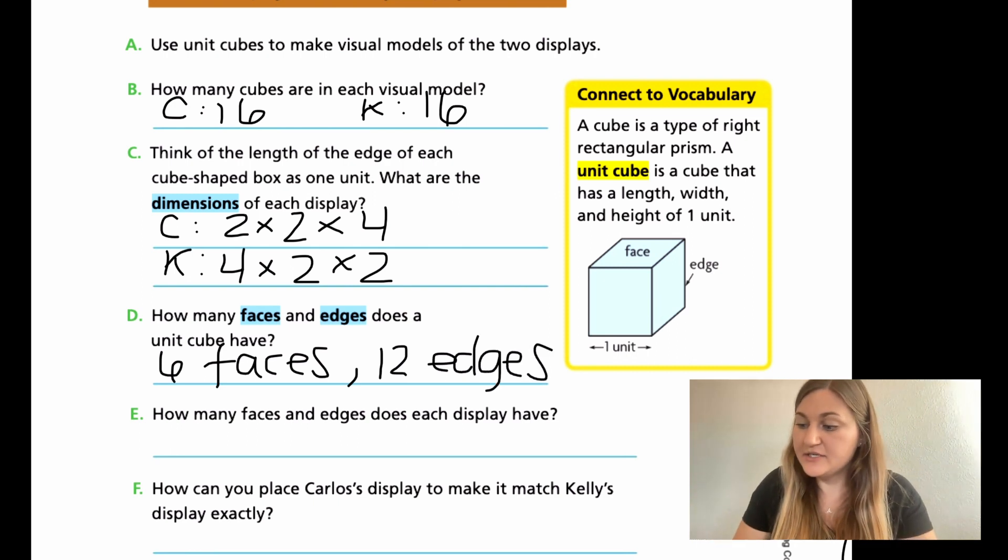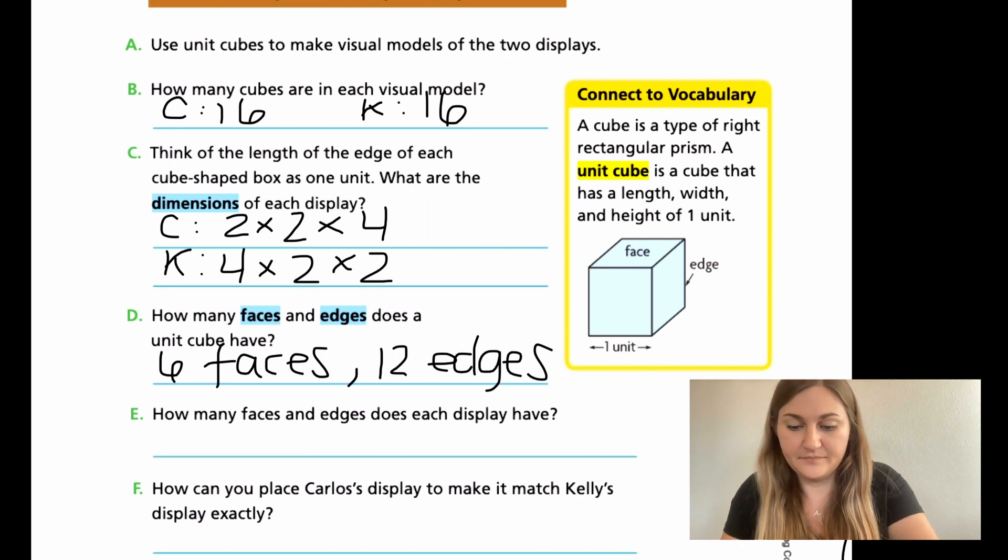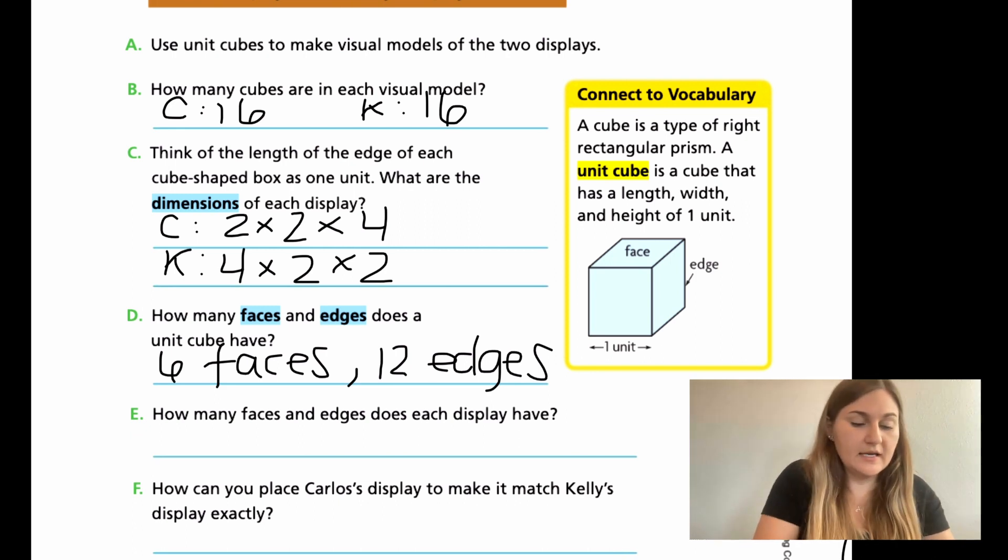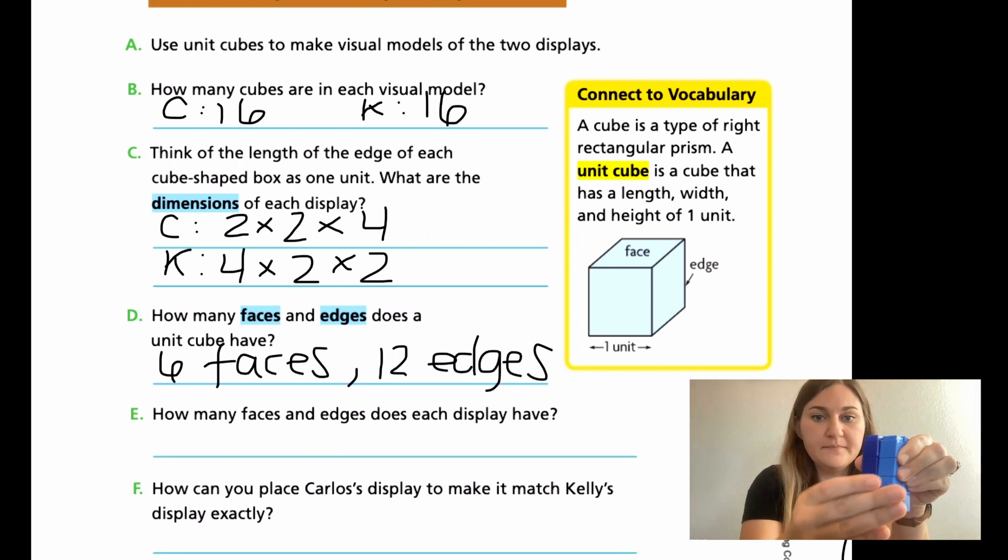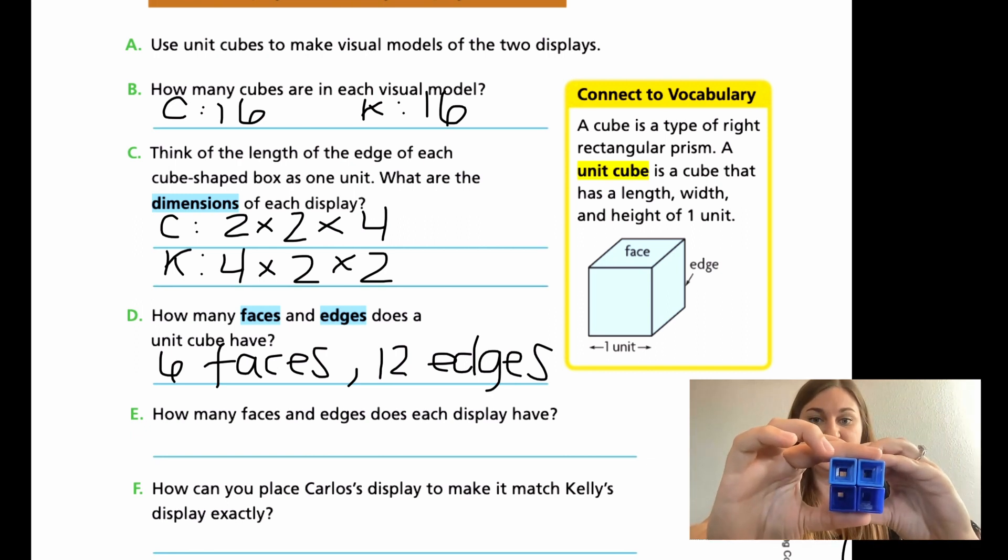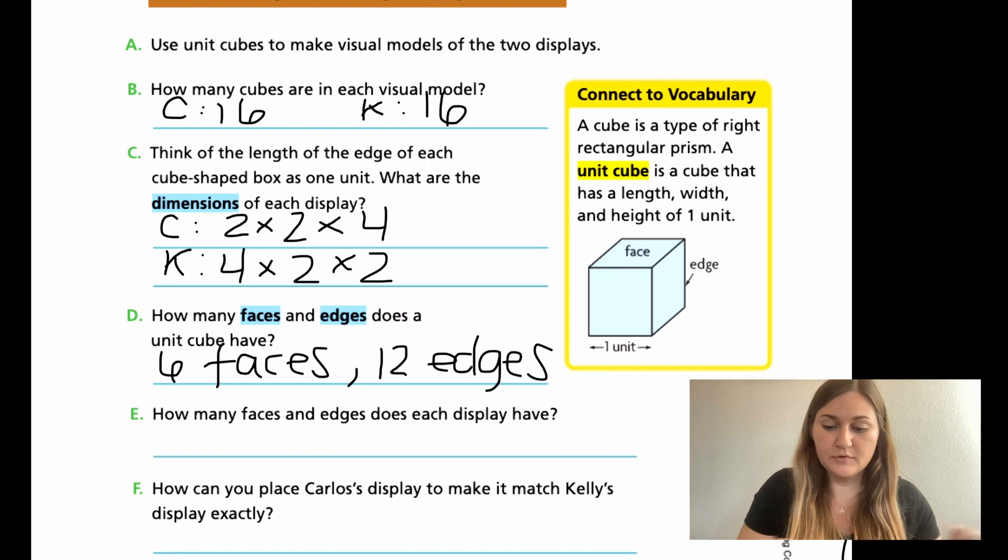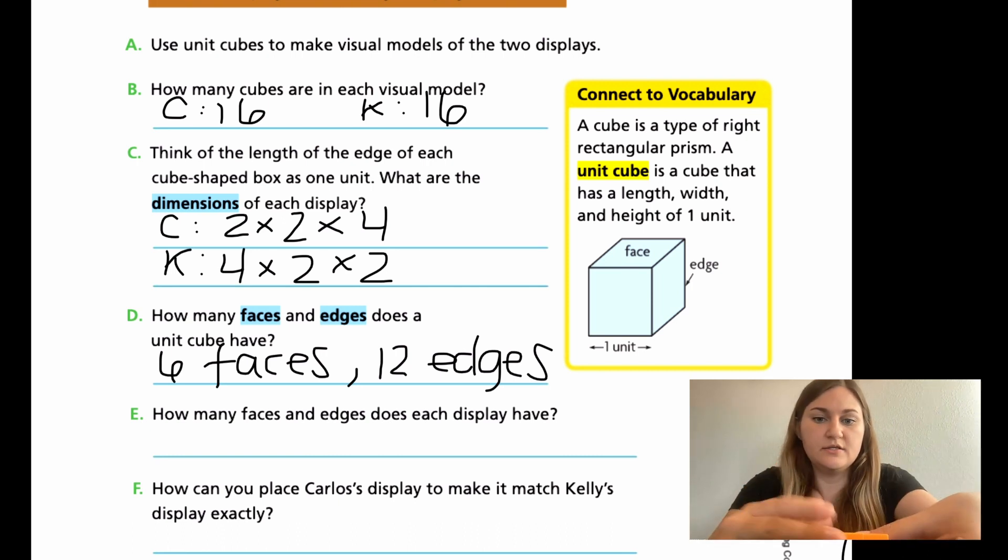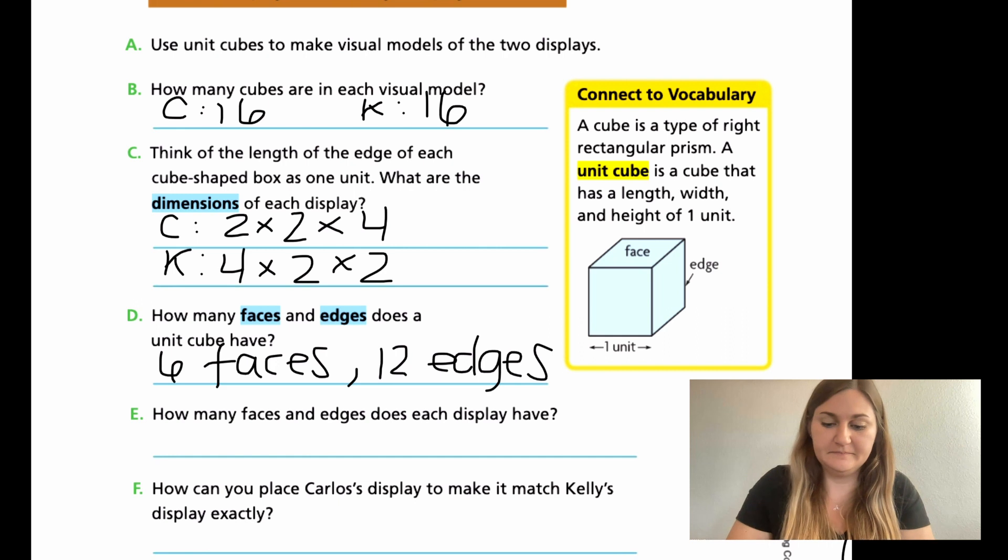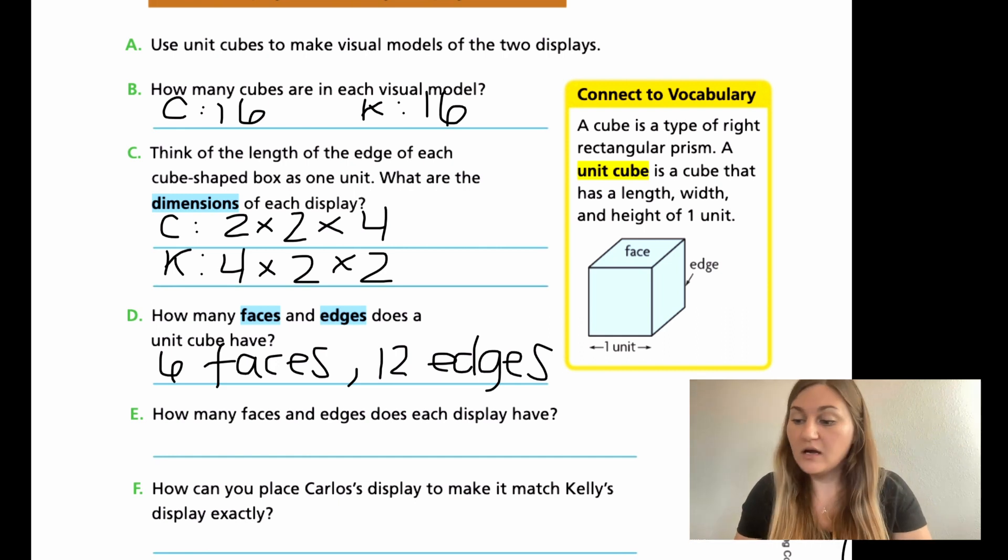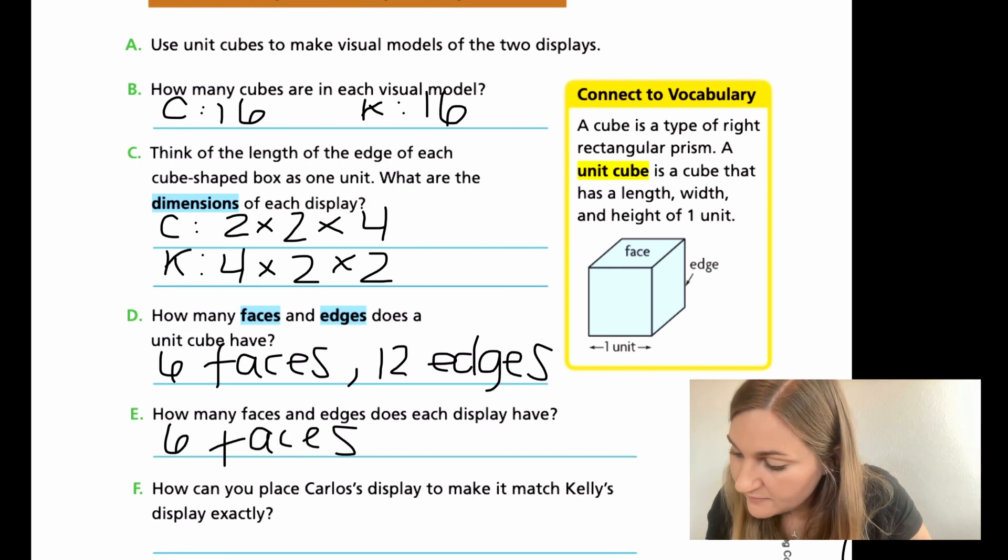So how many faces and edges does each display have? So if I'm going to use Carlos, again, faces. So one, two, three, four, five, six. Right? We get each side and the top and the bottom. Let's double check with Kelly's. One, two, three, four, five, and six. So again, along with the unit cube, each display, if it's a right rectangular prism, it should be the same, right? Should have six faces.